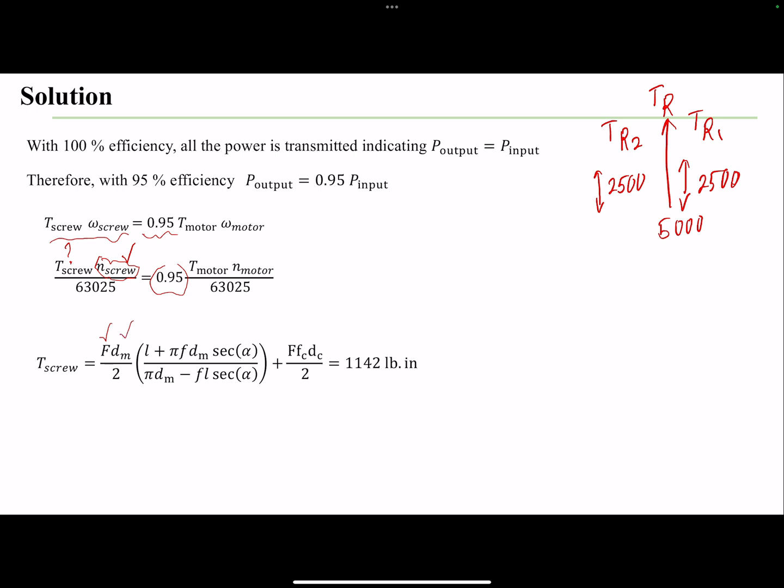So we have the equation for raising the load. We have this F value, so we don't need to divide it. We have the mean diameter, we have the lead, we have the coefficient of friction for each case, the diameter of the collar, the secant alpha. Alpha would be 14.5 in this scenario.